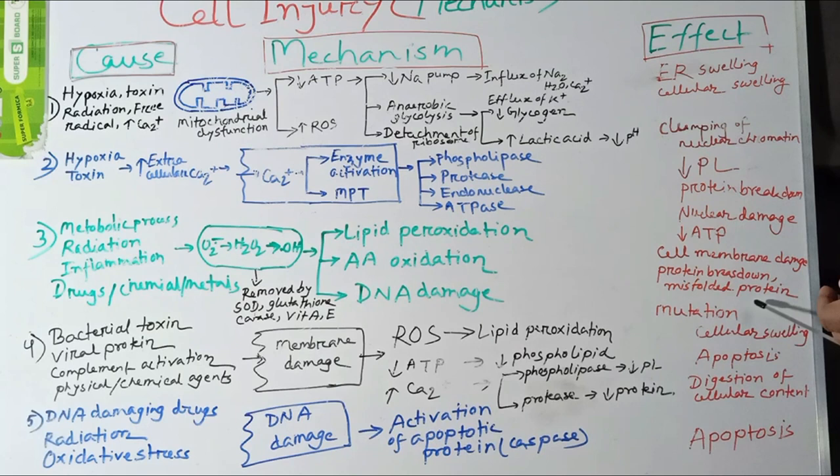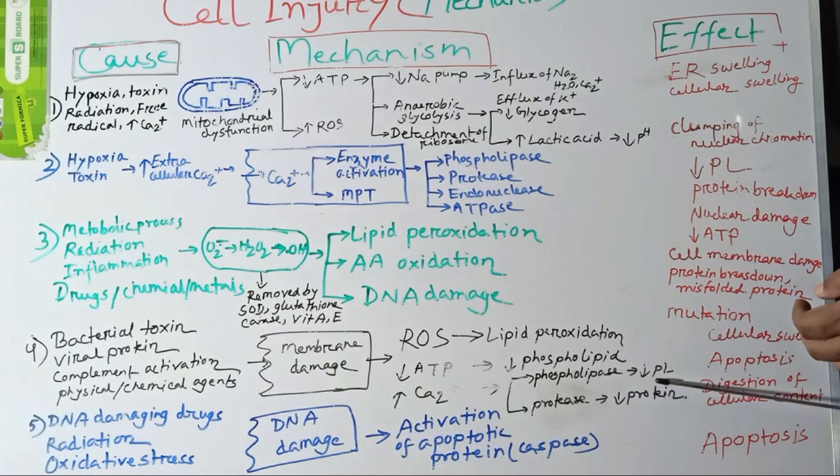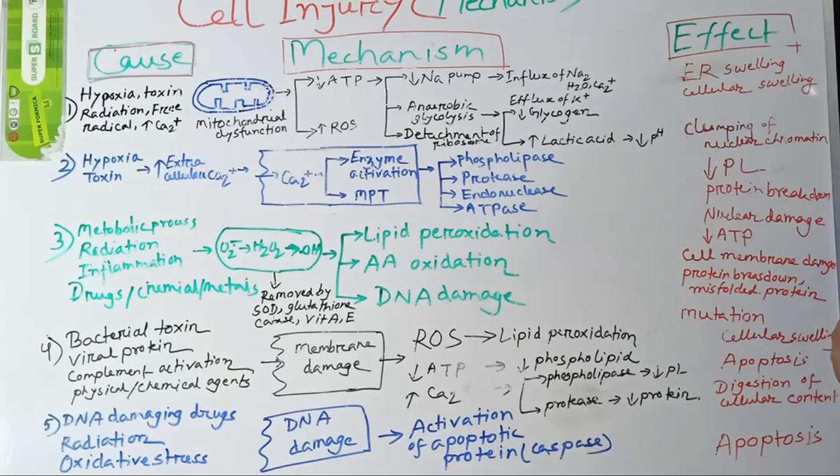Damage to the plasma membrane causes cellular swelling. Damage to the mitochondrial membrane causes activation of the apoptotic pathway. Damage to the lysosomal membrane causes activation of various enzymes like DNase and RNase, which cause digestion of cellular contents. These are the effects of membrane damage within cells.